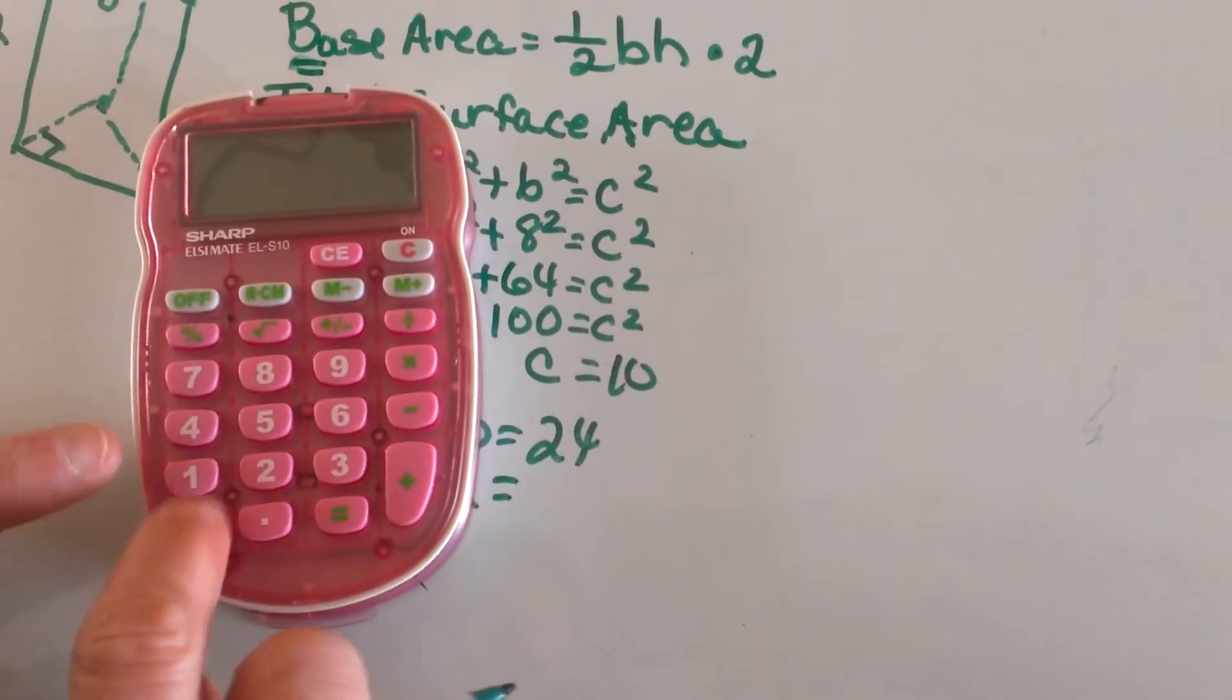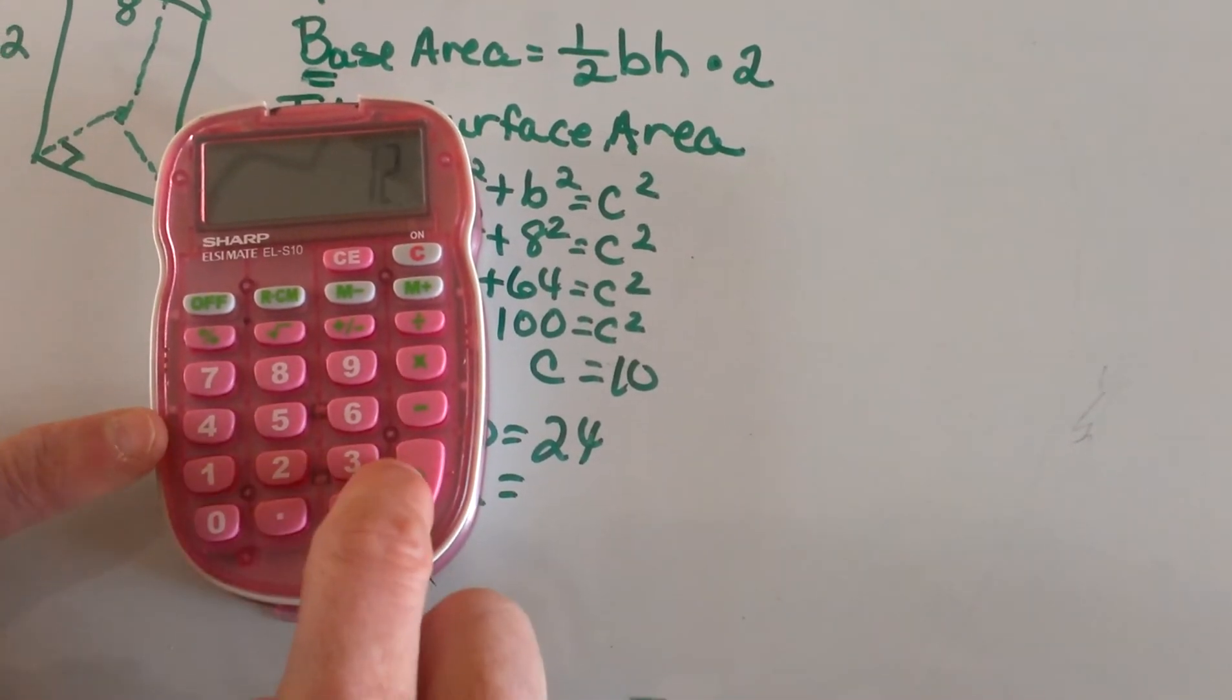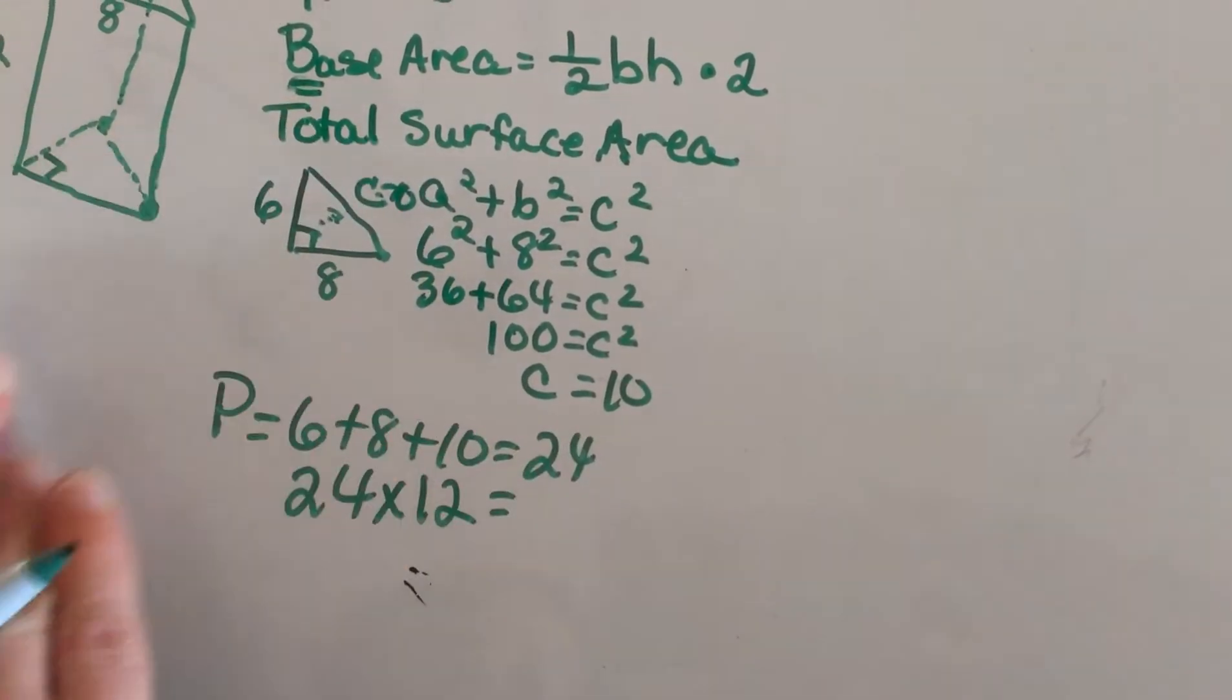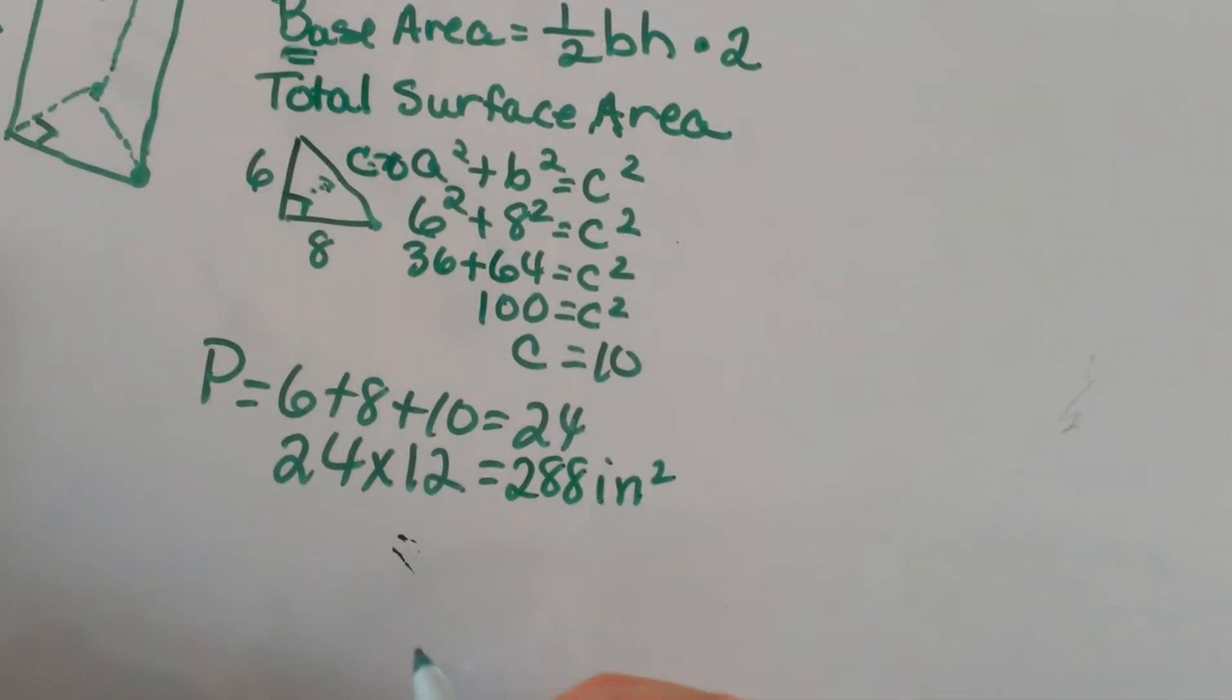I'll just grab my calculator: 24 × 12, and that gives me 288 square units, inches squared or units squared.